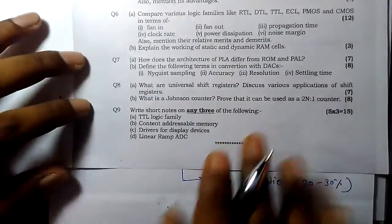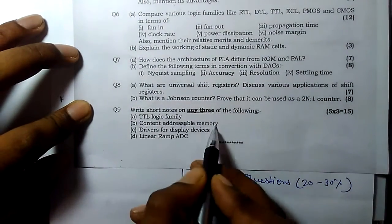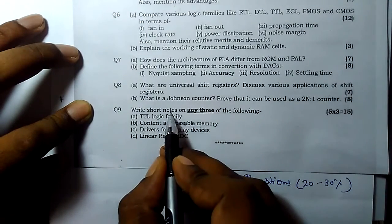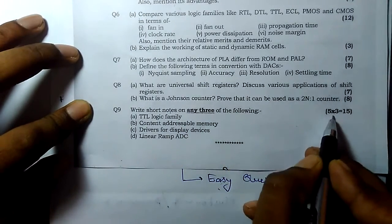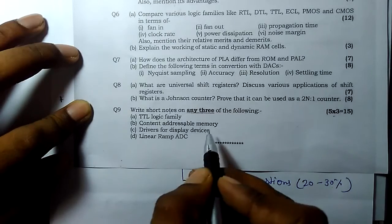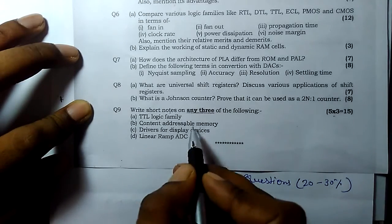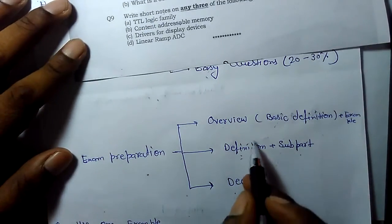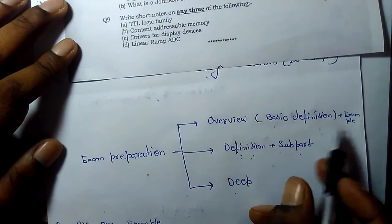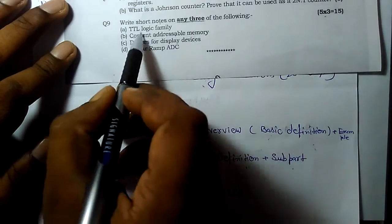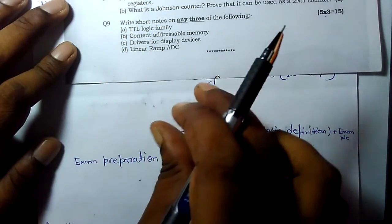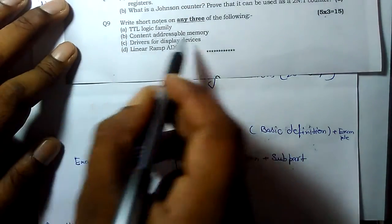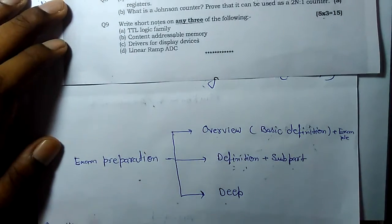For example, this is last question. You can see content addressable memory. What is this? It has written short notes, five marks. So you should write at least one and half to two pages. But what is this? Definition, overview, and basic definition you have studied, and one example. So you can describe this way. You can easily gain 4 marks.